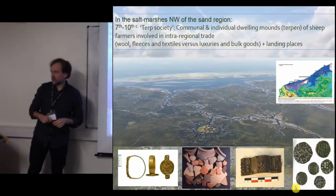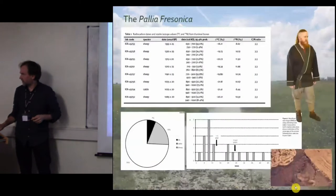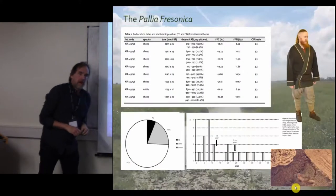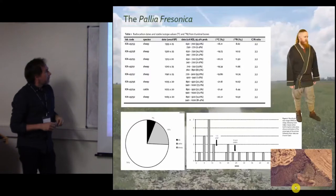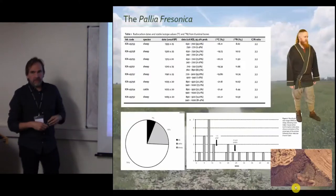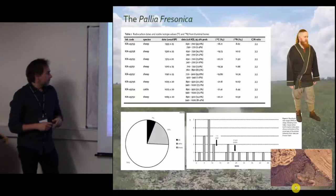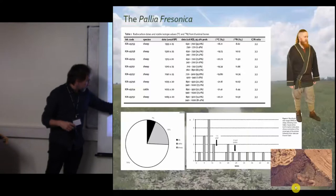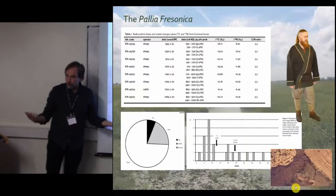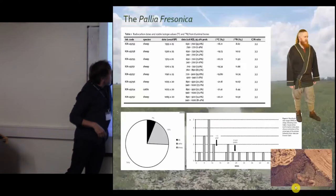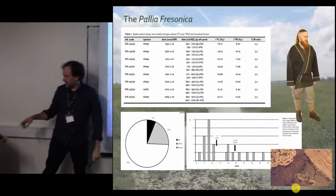They did not use dikes — that's important to stress. Their main product was the Pallia Fresonica, the Frisian mantle. When you excavate the Terps in Flanders you see a bone assemblage of 75% sheep bone, which is of course to be expected, and it goes on from the early 7th century up to the 11th century.